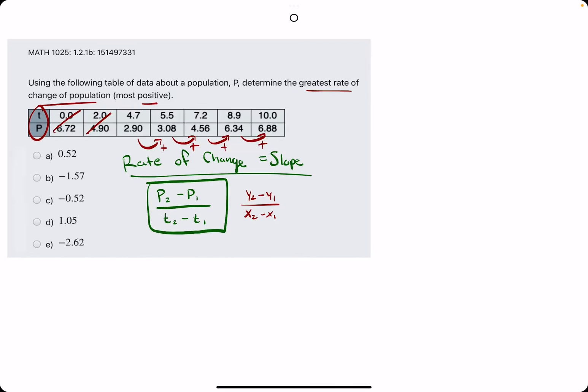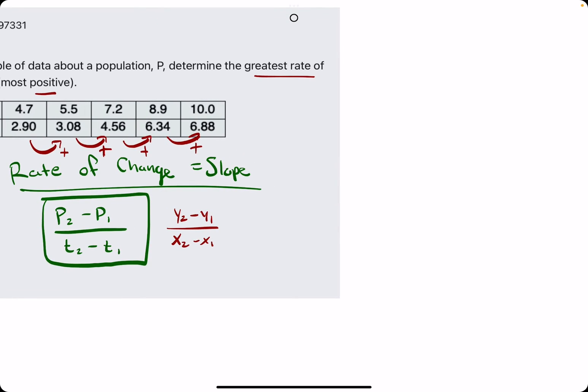So we're doing the setups here. We have 3.08 minus 2.9, change in P values divided by the change in T values. So we'll have that and I'll go ahead and set up all these slope equations before I calculate them.